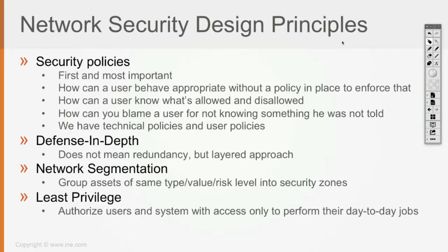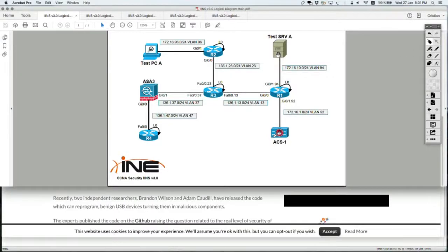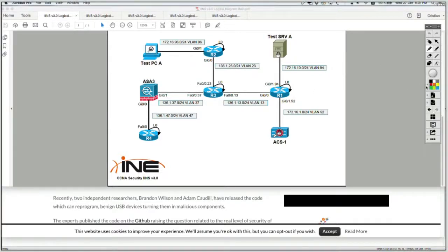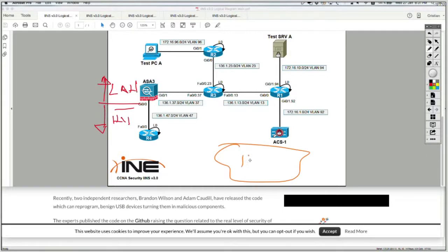The next big concept is defense in depth, which does not mean redundancy — like deploying three layers of firewalls — but it means a layered approach. If you look at the diagram, if this is your border network with the LAN side and the internet side, defense in depth means that as traffic comes in from the internet and Router 4 is your internet gateway, you have a basic level of security on Router 4, so a first traffic scrubbing happens there.